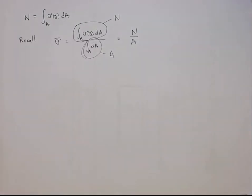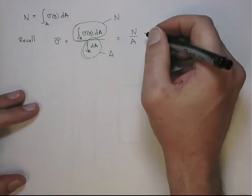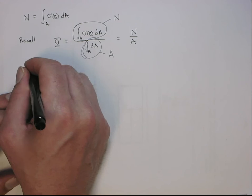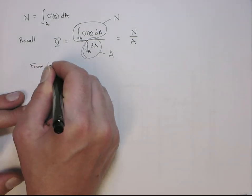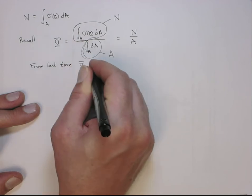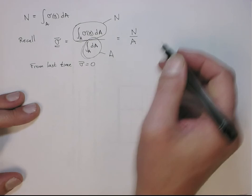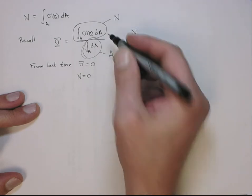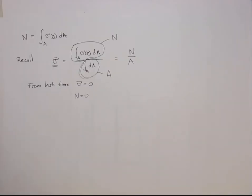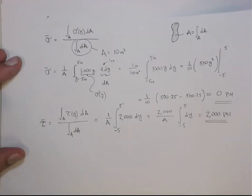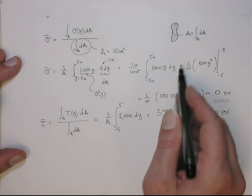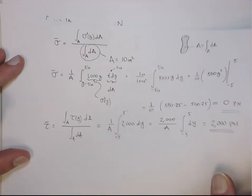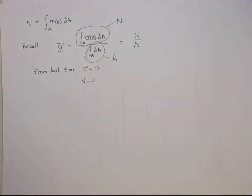From the previous video we already calculated this quantity, and from last time we figured out that this quantity was in fact zero. So that means from here that obviously N is also equal to zero. But you could get that from this integration. You can perform this integration, and you can see it comes out to zero.